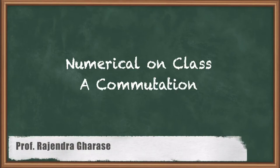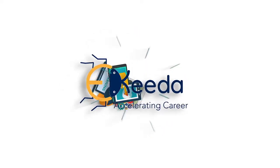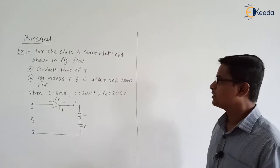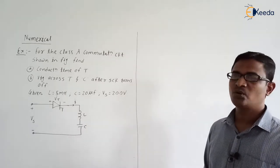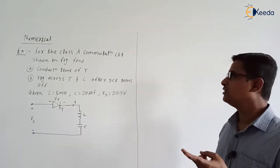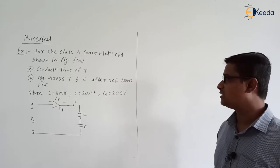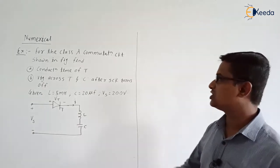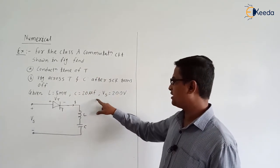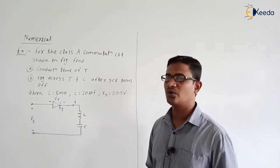Hello friends, in this video we are going to discuss the numerical related to class A commutation. For the class A commutation circuit shown in the figure, find: first, the conduction time of thyristor; second, voltage across the thyristor and capacitor after SCR turns off. Given values: L = 5 millihenry, C = 20 microfarad, supply voltage Vs = 200 volt.